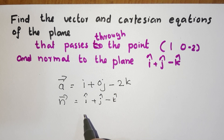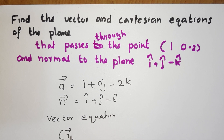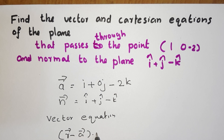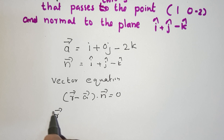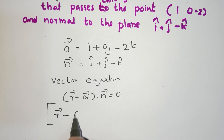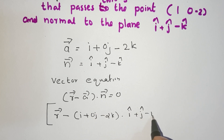Now we find the vector equation and Cartesian equation. The vector equation is: vector r minus vector a, dot vector n equals 0. So vector r minus (i plus 0j minus 2k), dot (i cap plus j cap minus k cap) equals 0. This is the vector equation.